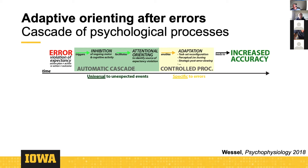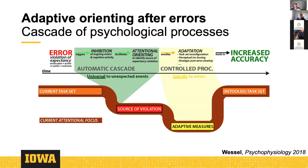How does this explain post-error decreases in accuracy, especially depending on the RSI? It comes down to what happens to the focus of attention. When doing a task, your attention is preoccupied with the current task set. When you make an error, this inhibition-attentional orienting cascade interrupts your ongoing task set and associated motor programs, shifting attention towards finding the source of the violation, and then towards designing specific adaptive measures to retool your task set.